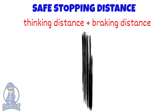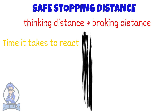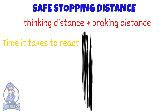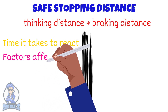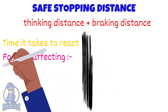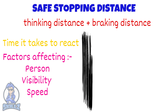The thinking distance is the time it takes for you to react. If you are driving and you suddenly see a man blocking your path, the distance it takes for you to react to this is called the thinking distance. Many factors affect the thinking distance including the person driving, the visibility, and the speed.